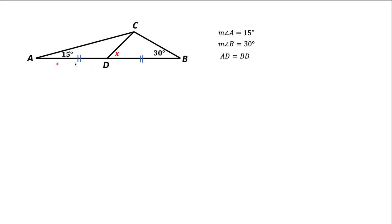Here we have a triangle ABC and we know two angles of that triangle. Angle A is 15 degrees, angle B is 30 degrees, and we also have a side bisector CD that splits the side AB into two halves — AD equals BD. We are asked to find angle X, which is the angle CDB.